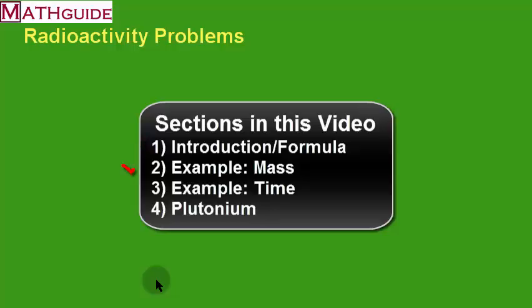We're going to talk about the formula and what it actually means to deal with radioactivity. Part two is going to talk about an example about how to calculate mass. In our third section, we're going to talk about another example where we're going to calculate for time. In our fourth section, we're going to talk about plutonium. Let's get to work.